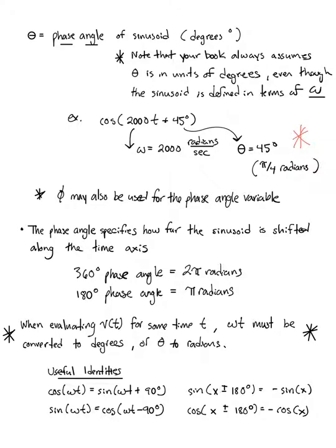That brings us to some useful identities. Cosine and sine are actually the same function, just with exactly a 90 degree phase shift between them. Cosine is a sine plus 90 degree phase shift. Likewise, sine is just a cosine with negative 90 degree phase shift. Plus or minus 180 degrees in either is just the negative of the original.